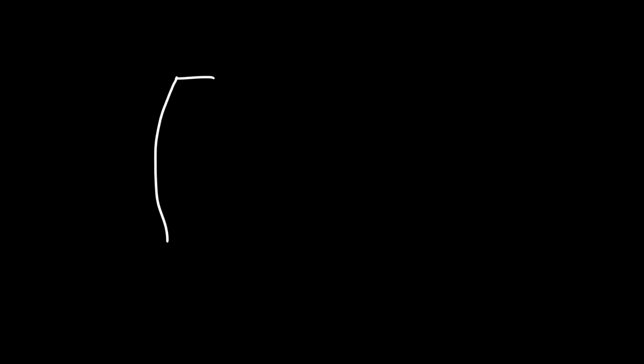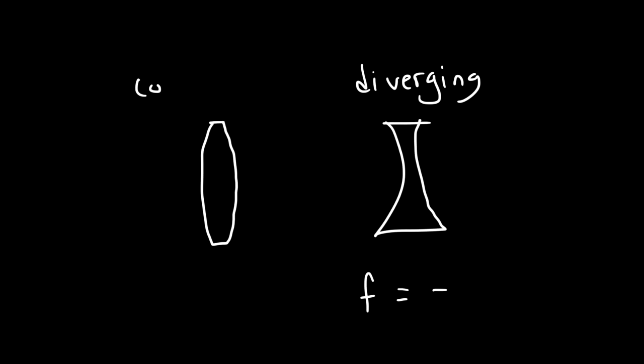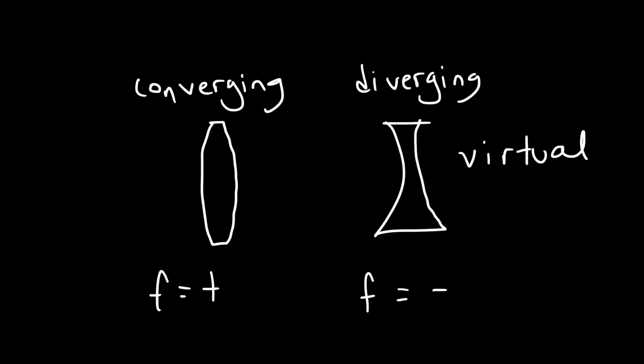Now let's talk about lenses. This is a convergent lens, and this is a divergent lens. The focal length for a divergent lens will be negative, but for a convergent lens the focal length is positive. A divergent lens will always produce a virtual image. For a convergent lens, it can produce a real image or a virtual image depending on where the object is located relative to the focal length.